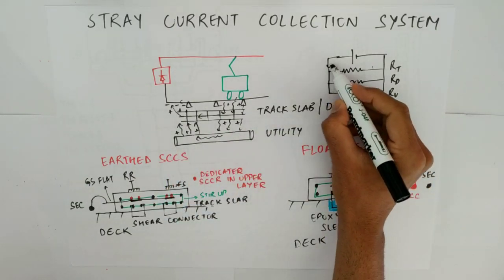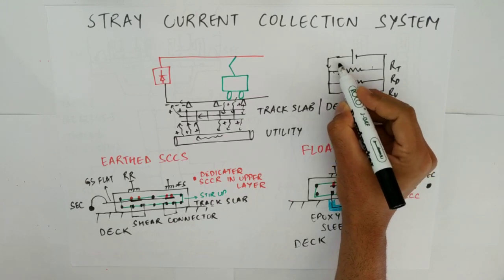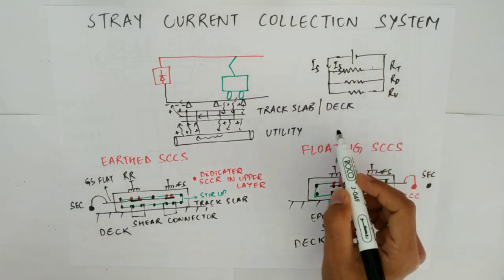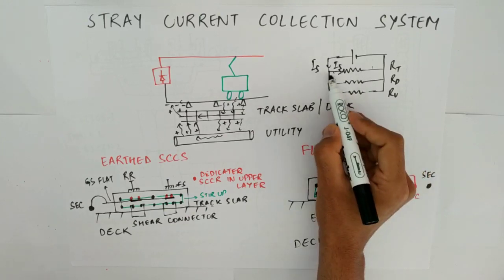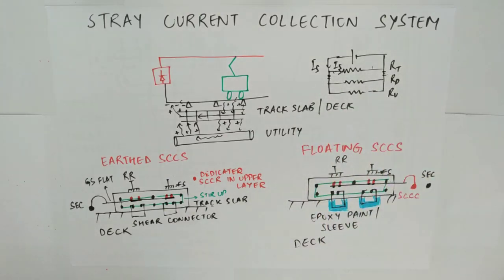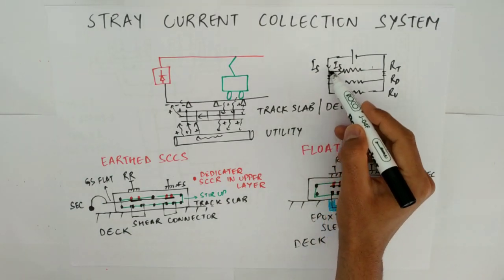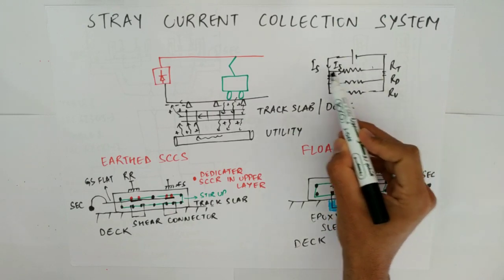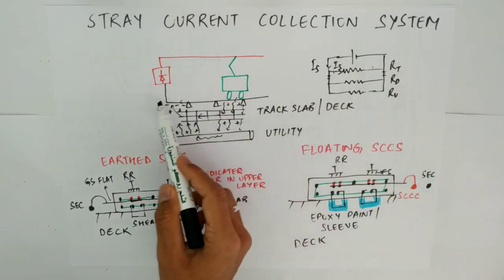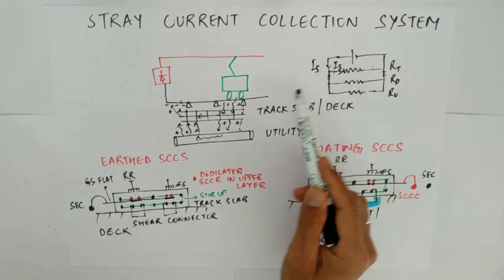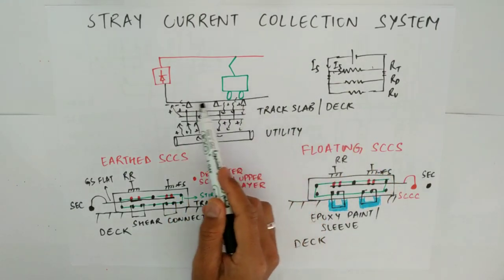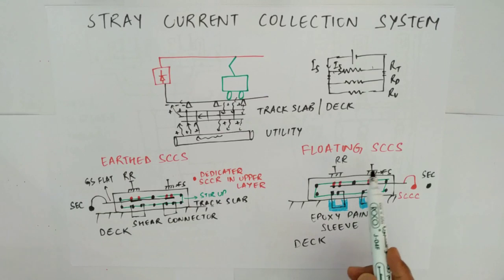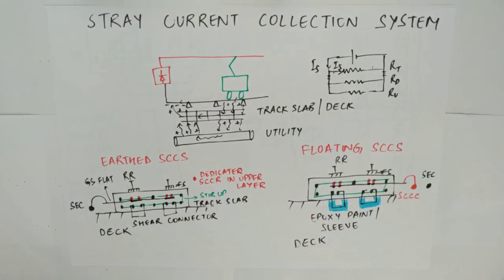By reducing this resistance, the stray current that is flowing will all enter into the track itself. By reducing the resistance RT and increasing the resistance below, the current will not go below and will remain here — which is what we do in case of running rails. In case of running rails, we try to provide design provisions to reduce the longitudinal resistance and increase the insulation. This concept is followed by the floating stray current collection system.